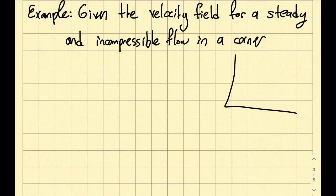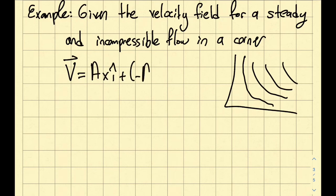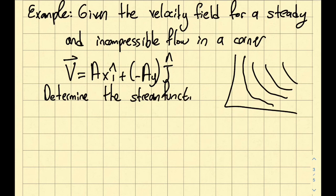What I mean, my corner is, I'm just trying to obtain these kind of stream functions, you will see. And the velocity is given to me as AXI plus minus AYJ. And the question is, determine the stream function.